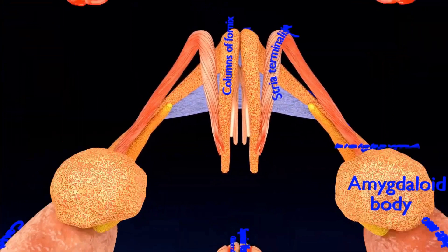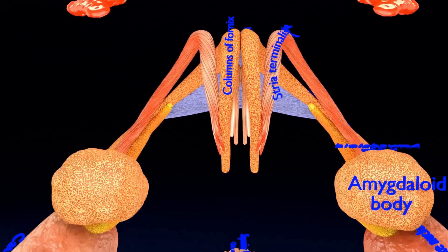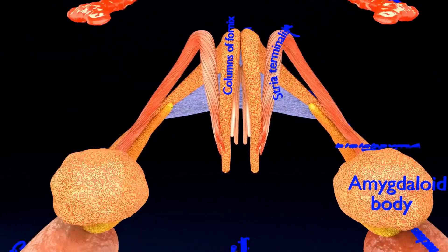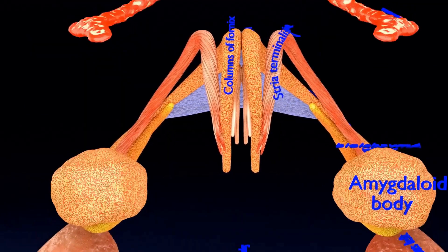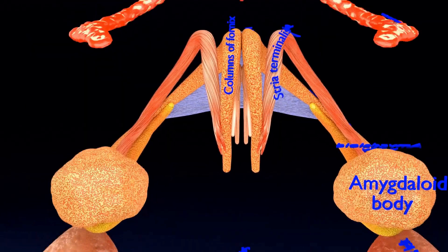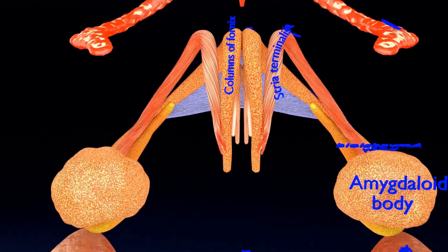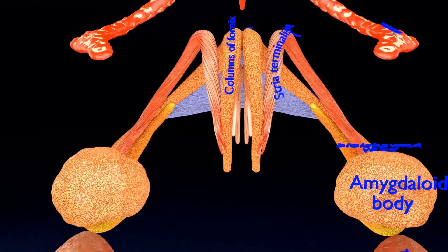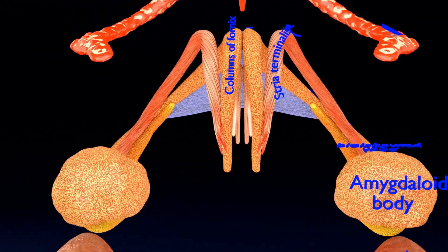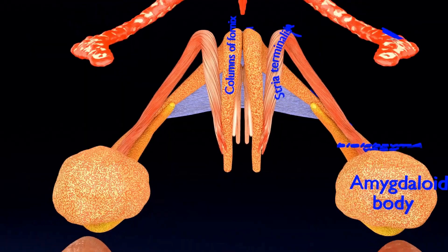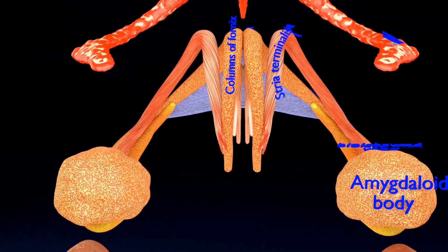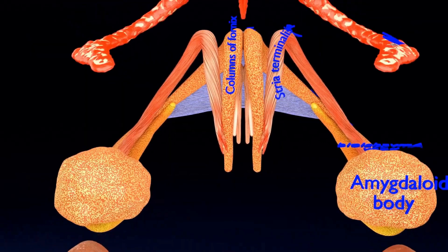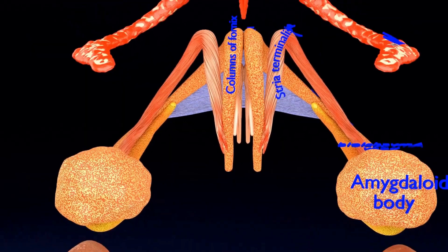The stria medullaris is a fiber bundle considered part of the epithalamus. It projects from a number of areas — for example, the limbic system and basal ganglia — to the habenula. It sends information to areas of the midbrain involved in dopamine release, such as the substantia nigra and ventral tegmental area.